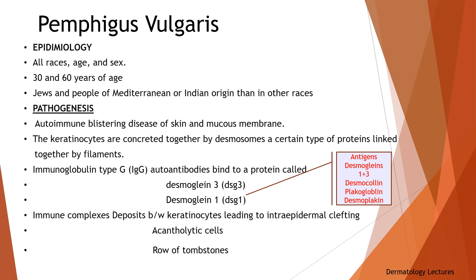Pemphigus vulgaris is an autoimmune blistering disease of skin and mucous membranes. The keratinocytes are cemented together by desmosomes, a certain type of proteins linked together by filaments. The desmosomal cadherin family is a major structural unit of the desmosome. It is composed of desmogleins and desmocollins — glycoproteins containing a single transmembrane domain through which they interact extracellularly, contributing to intercellular adhesions.